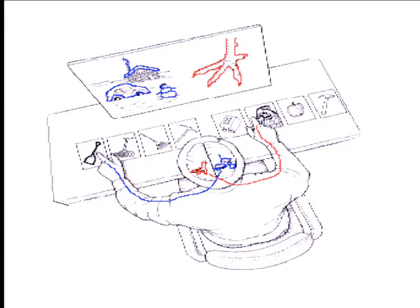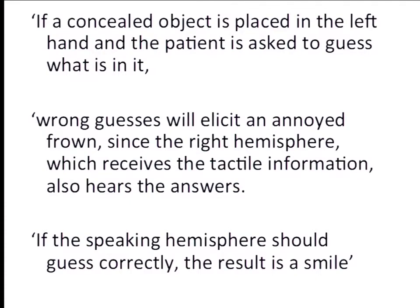Here's the pipe/pencil example. If a concealed object is placed in the left hand and the patient is asked to guess what's in it, the tactile information goes to the right hemisphere which doesn't do language. So the left hemisphere, which is trying to produce speech, says 'I don't know.' But the right hemisphere has some control over movement of the left hand for writing. So with the left hand it clumsily starts writing 'P' for pipe — and then suddenly the left hemisphere seizes control and writes 'pencil,' because it sees the beginning letters and guesses that's what's being written.